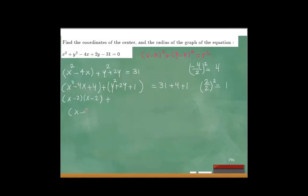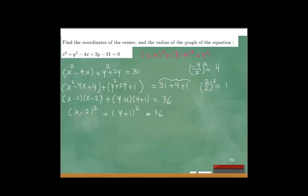The x trinomial factors as (x − 2)², so h = 2. The y trinomial factors as (y + 1)², so k = −1. On the right-hand side, 31 + 4 + 1 = 36, which is r². So the center is (2, −1) and the radius is √36 = 6.